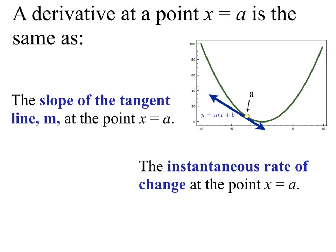We want to make connections between terminology. The derivative at a point x = a is the same thing as the slope of the tangent line m at x = a, which is also the same as the instantaneous rate of change at x = a. So when doing problems, you might be asked to find the derivative, the slope of the tangent line, or the instantaneous rate of change — all of those are just the limit of the difference quotient.